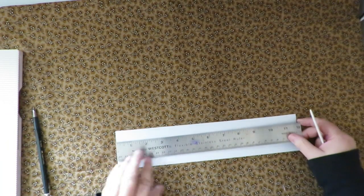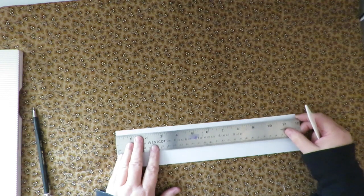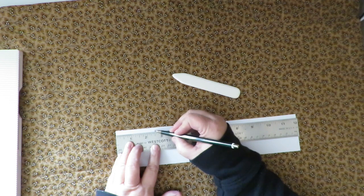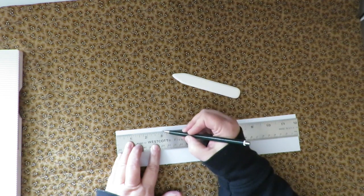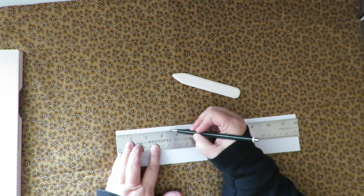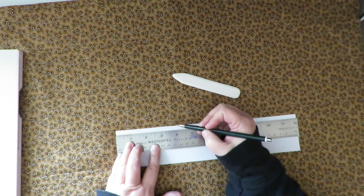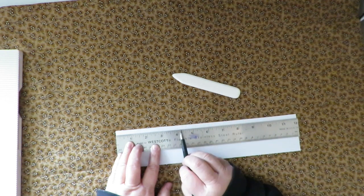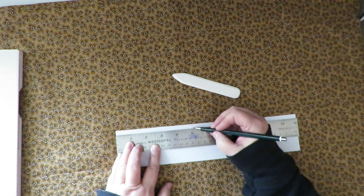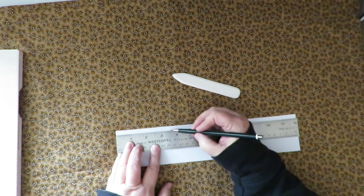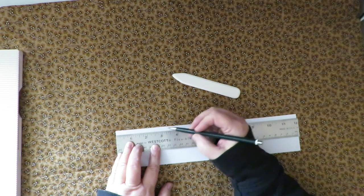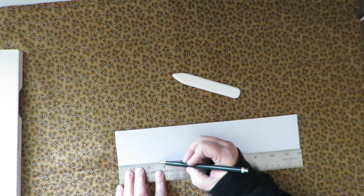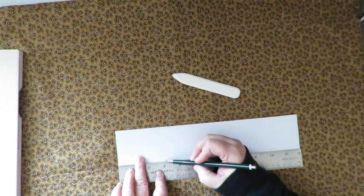Next you're going to want to mark your strip at the places where you're going to score it. You want to do the first mark at two inches and then half inch increments to make five little half inch sections that are what you're going to attach your cards to. So make your marks on the top and on the bottom and then do your scoring with a scoring tool.